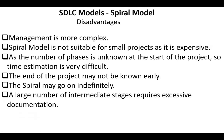However, the spiral model has the following disadvantages: management is more complex, not suitable for small projects, and in most cases it's an expensive model. As the number of phases are not known at the start of the project, time estimation is very difficult, so the end of the project may not be known early. The spiral may go on indefinitely, and a large number of intermediate stages requires excessive documentation.